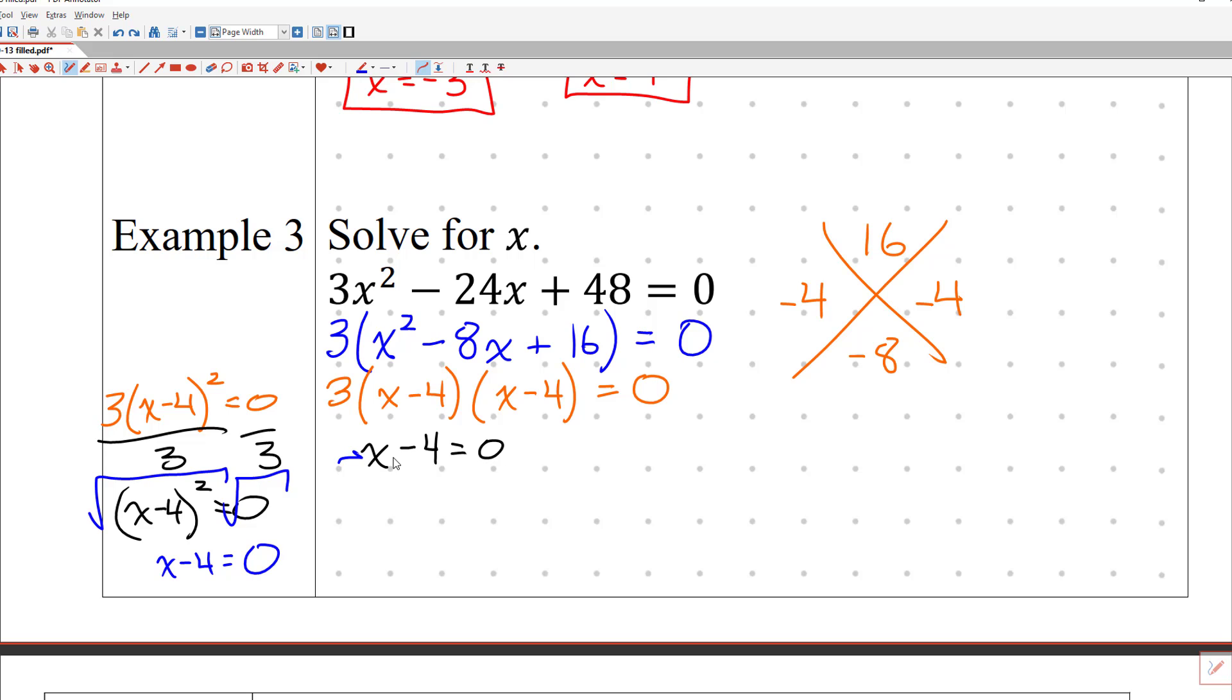And that's the line that we're getting right here. Just kind of another perspective. And then adding four to both sides, x is equal to four. And there's only one answer. Box it. That concludes Algebra 1 notes. I will see you guys tomorrow.